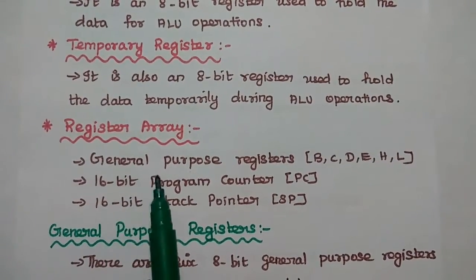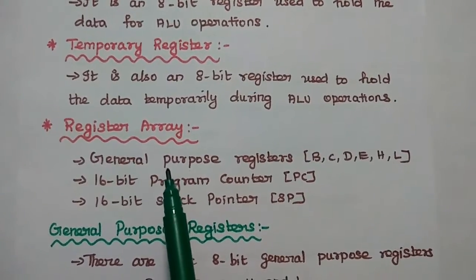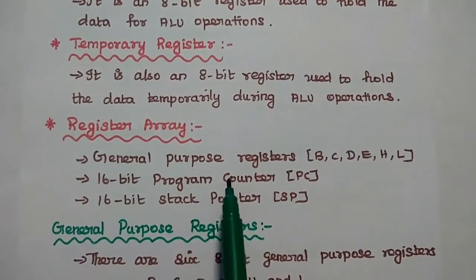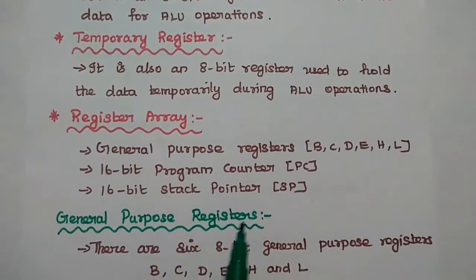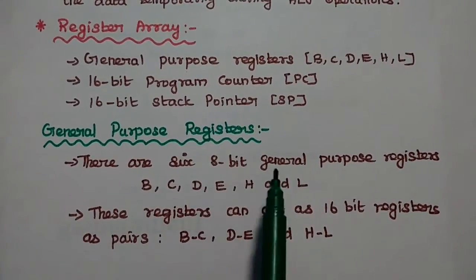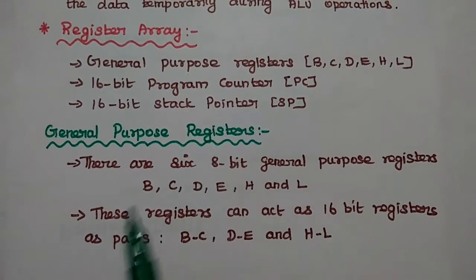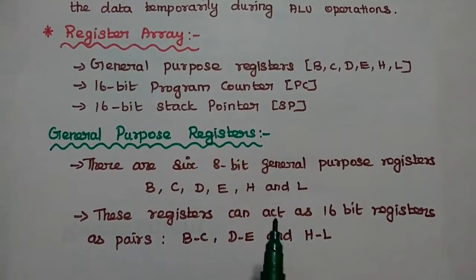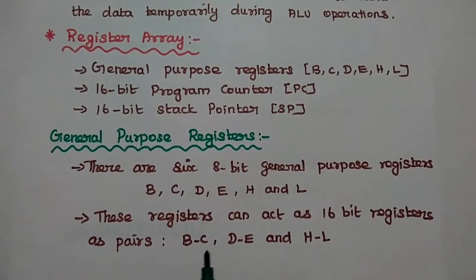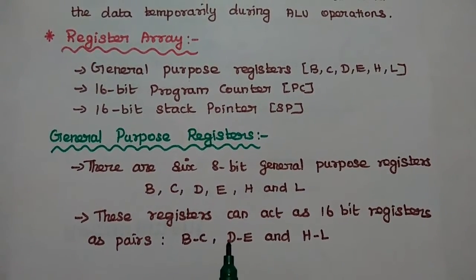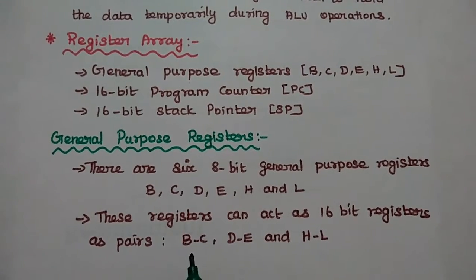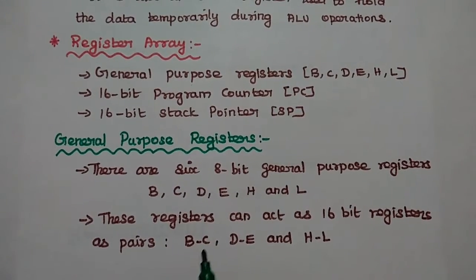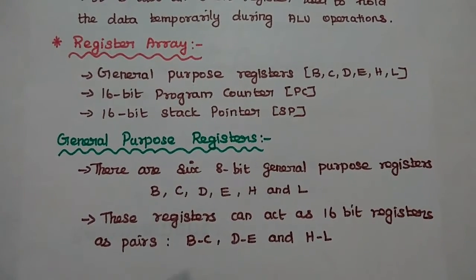The register array contains 6 general-purpose 8-bit registers: B, C, D, E, H, and L. It also includes a 16-bit program counter and a 16-bit stack pointer. These registers can act as 16-bit registers when paired as BC, DE, and HL. Invalid combinations such as B and E are not allowed.